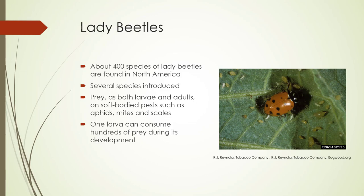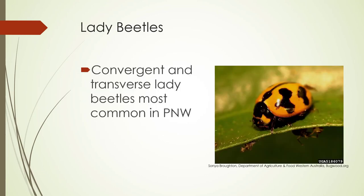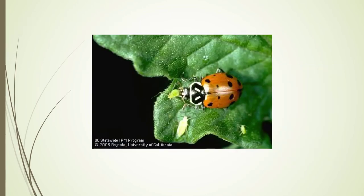Lady beetles: there are about 400 species in North America, and several species have been introduced. They prey both as larvae and adults on soft-bodied insects such as aphids, mites, or scales. One larva can consume hundreds of prey during its development. The most common ones here are the convergent and the transverse lady beetles, feeding on aphids.